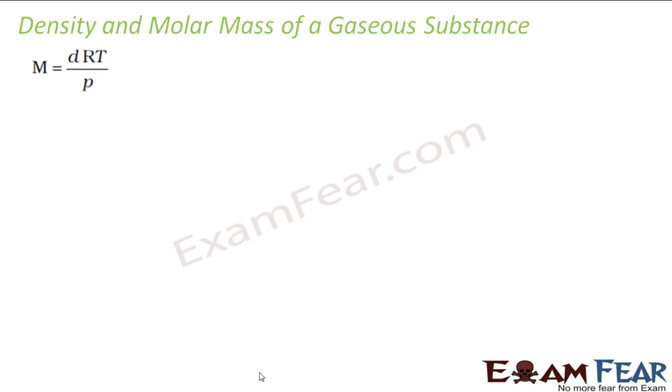Let us take the relation between the density and the molar mass of a gaseous substance. The molar mass M is nothing but dRT by P. d is the density. We can easily get this formula. We know that PV equals nRT. What is n? Number of moles. That is nothing but mass by molar mass.